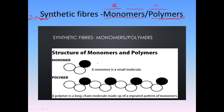The structure of a monomer is a single small molecule. A polymer is a long chain molecule made up of a repeated pattern of monomers. So when monomers — one, two, three, four, or even more — are joined together, they make a polymer. If there are more than one monomer joined, that means it's a polymer.